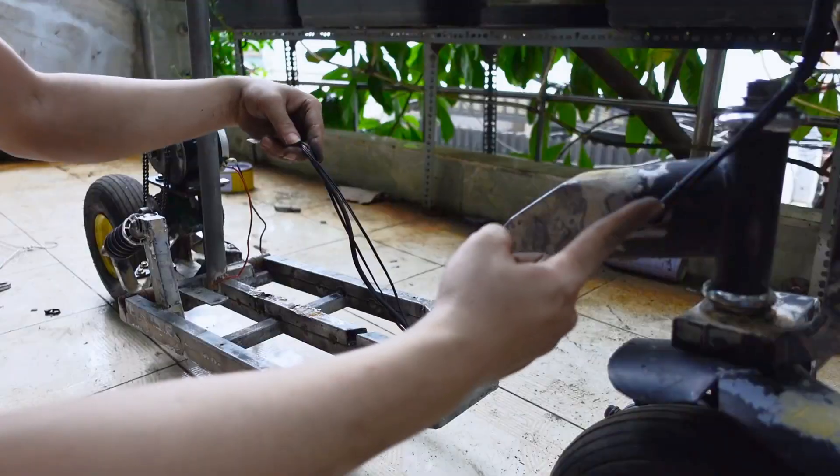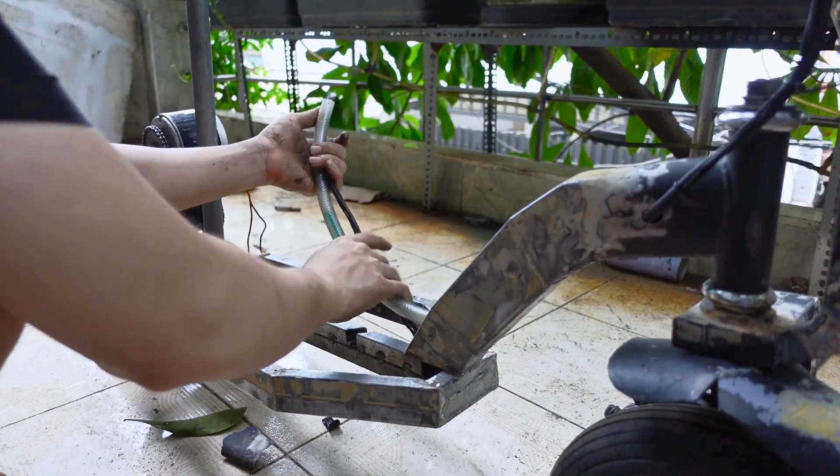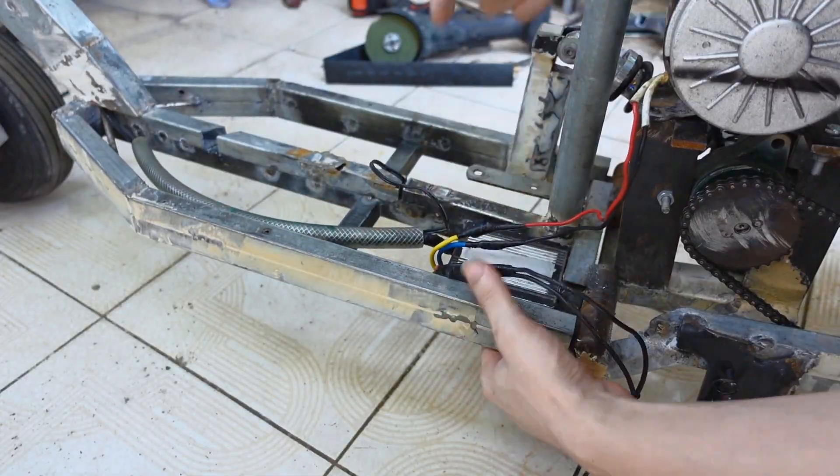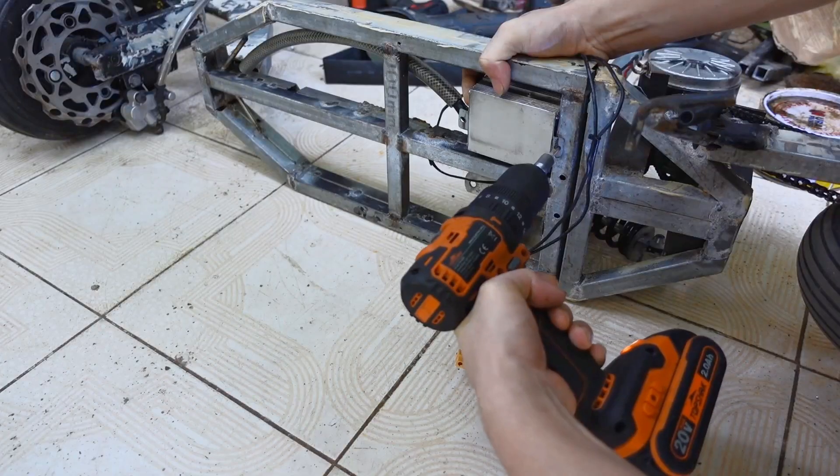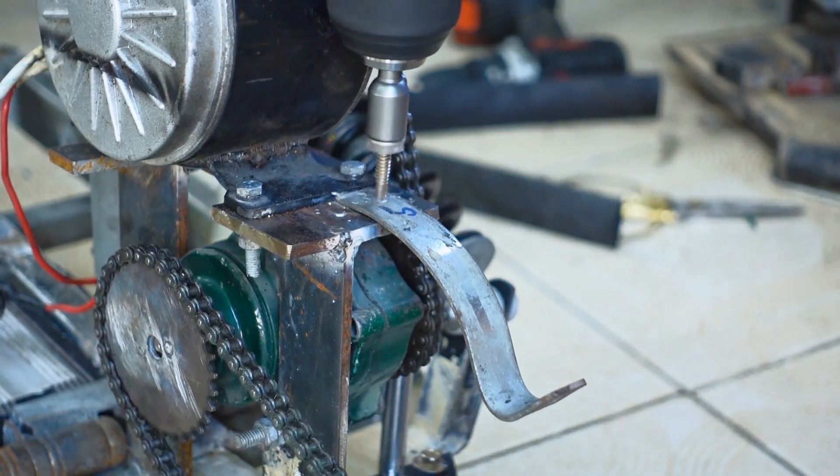Next, I will drill a hole and thread the power cord into the chassis to make it look cleaner. Next, I'll connect it with the speed controller. This is a 350W electric car regulator. You can adjust the speed of the car.